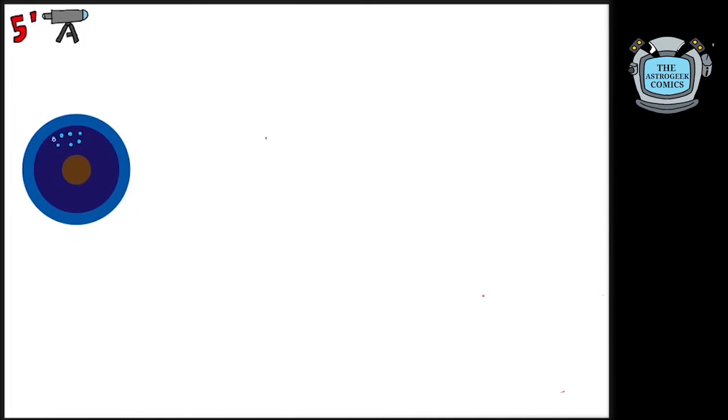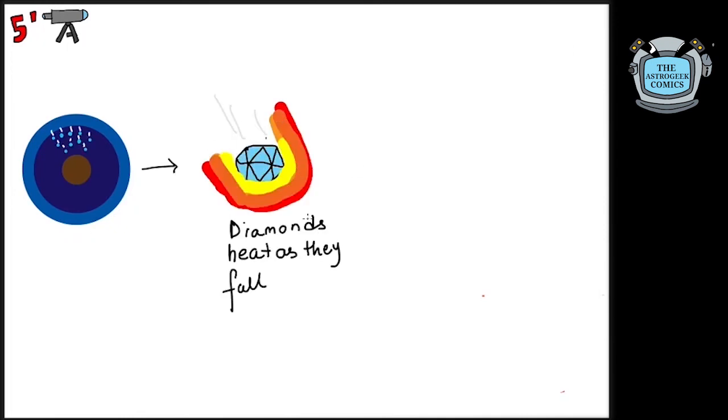As the diamonds rain down in Neptune, they convert gravitational potential energy to heat energy. This internal heat being produced in the ice's layer of Neptune is responsible for the fact that Neptune releases twice the heat it actually absorbs from the sun.